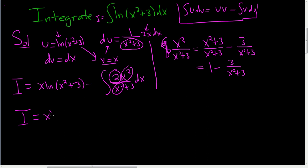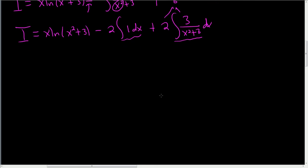So i is x natural log x squared plus 3 minus 2 times the integral of 1 dx. Right, that's from this. That's the 1. And then plus, because we have a minus here and we have a minus here, so plus 2 times the integral of 3 over x squared plus 3. I just realized it probably would have been easier to multiply the 2 into 3 because that gives us 6. All right, so this is easy to integrate. This is going to give us x. What about this? This is going to be an arc tan. So let's finish.